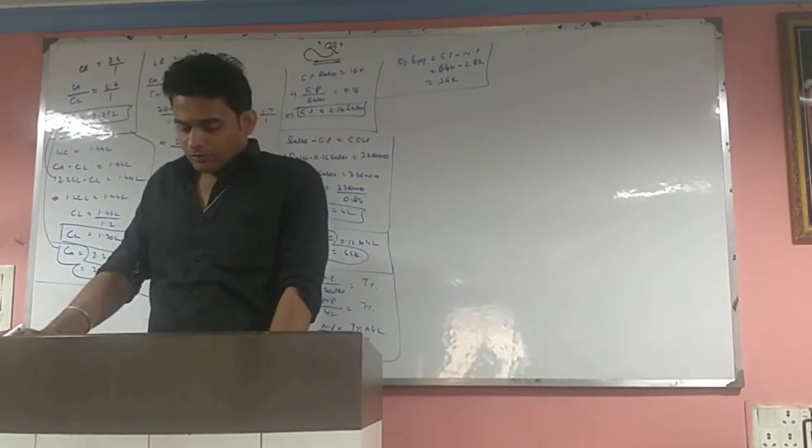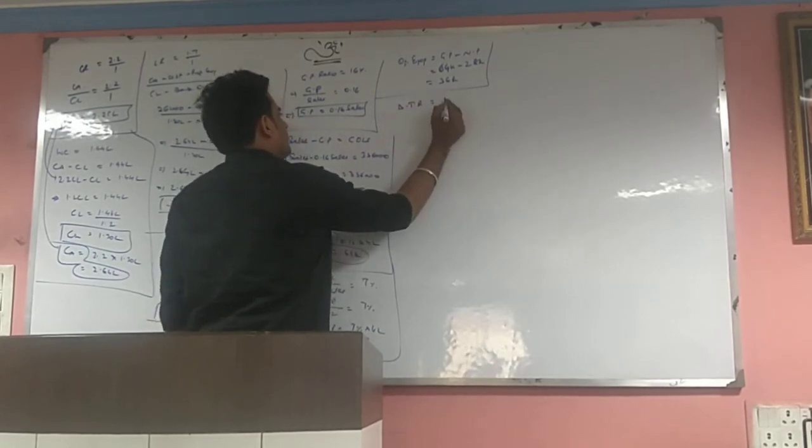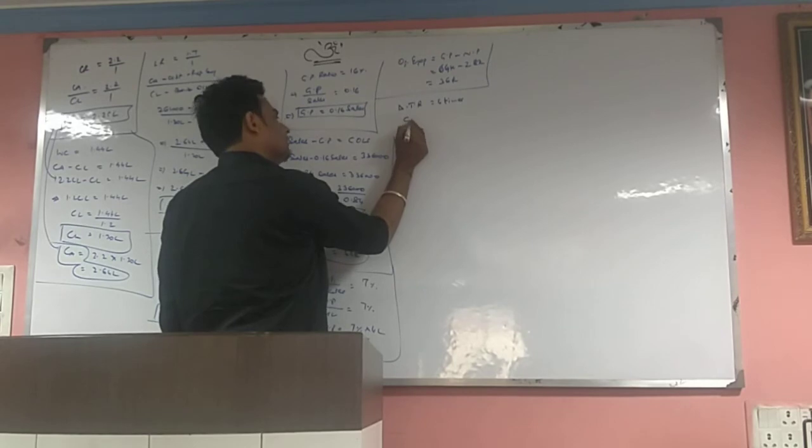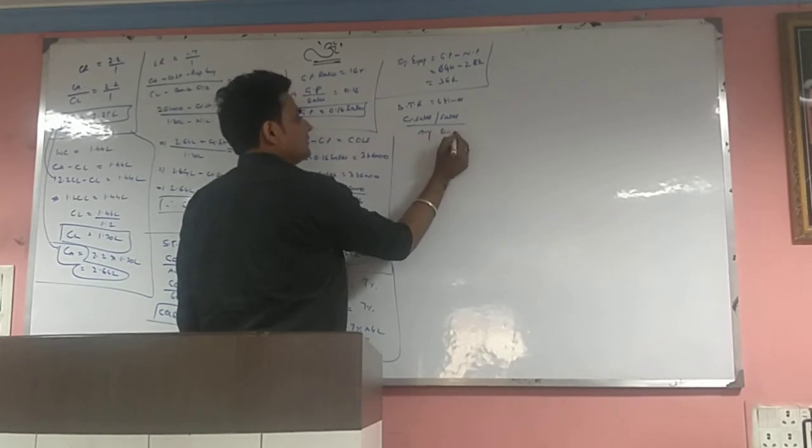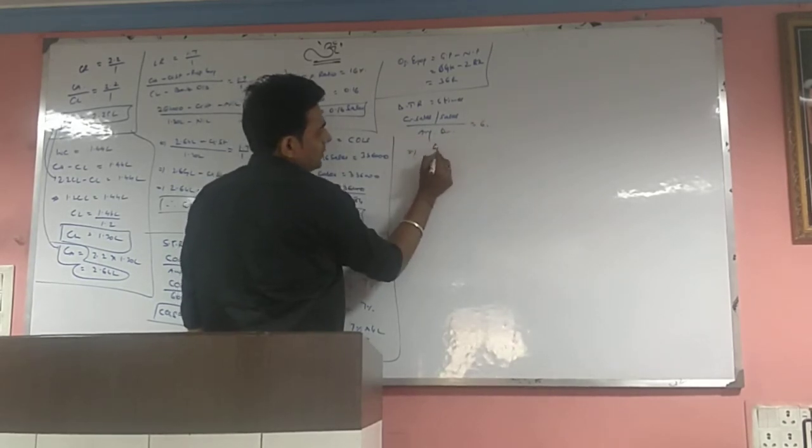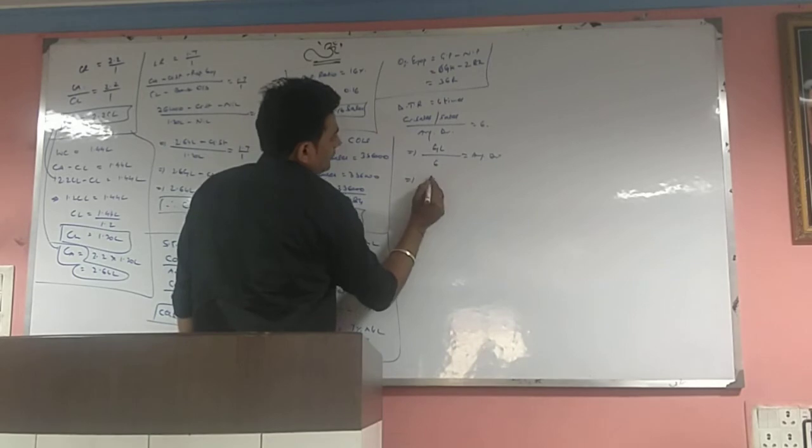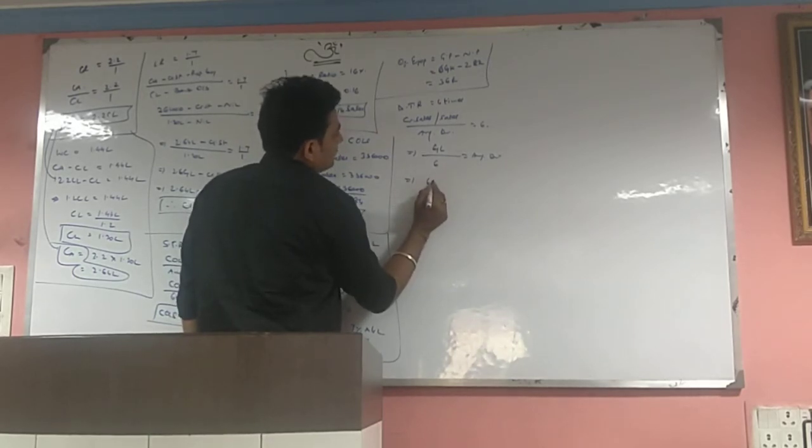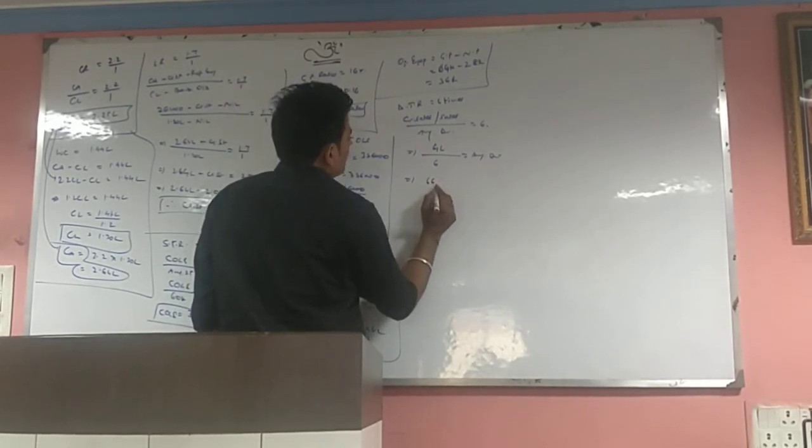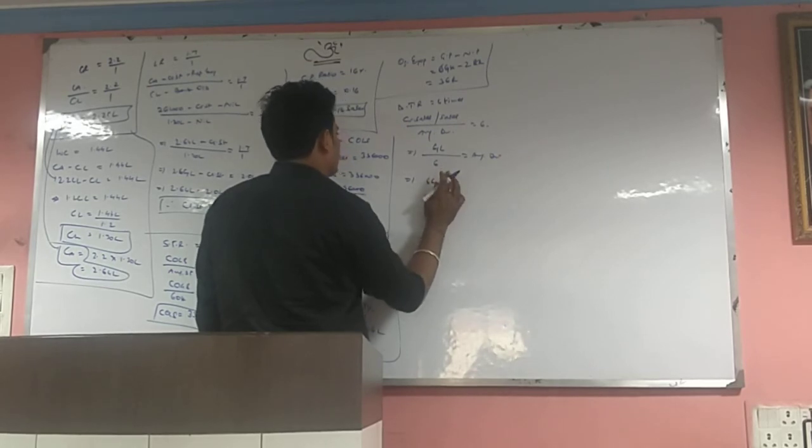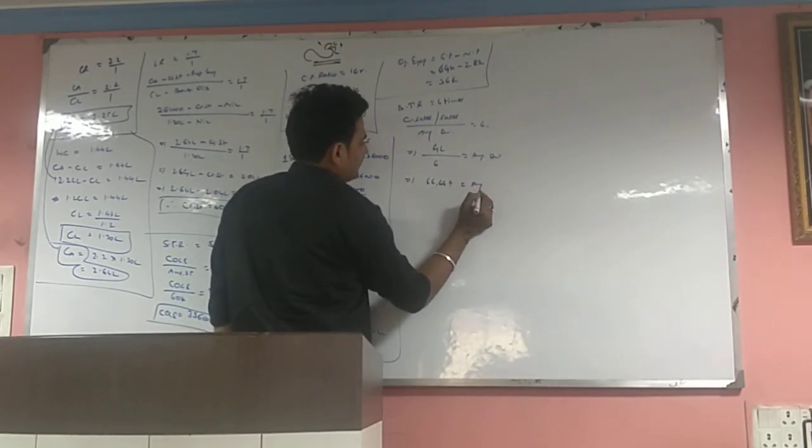Next we have debtors turnover ratio, 6 times given. Debtors turnover is credit sales divided by average debtors. If we don't know credit sales separately, use total sales. 4,00,000 divided by 6 equals average debtors. This gives us 66,666.67 approximately. Average debtors found.